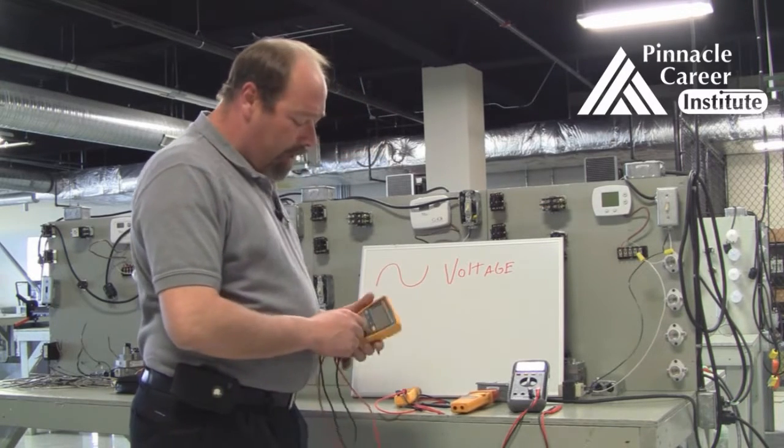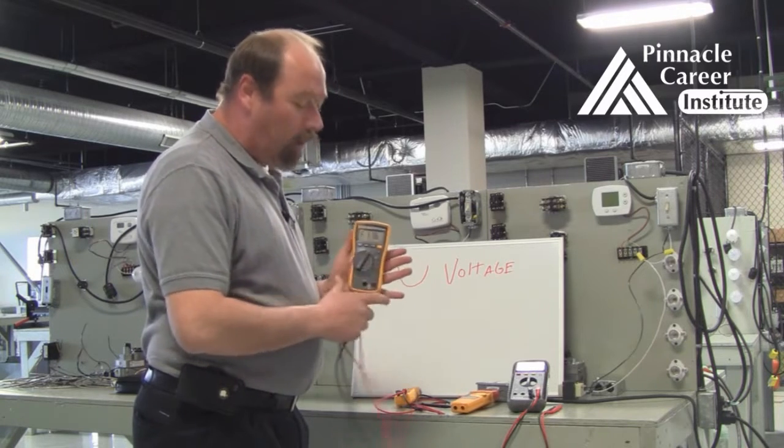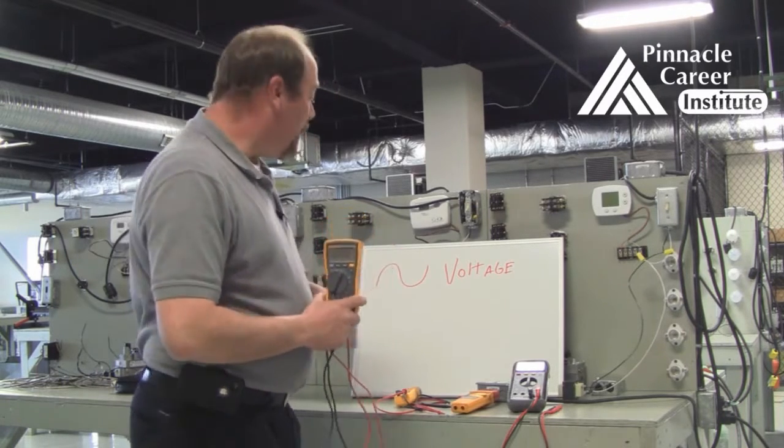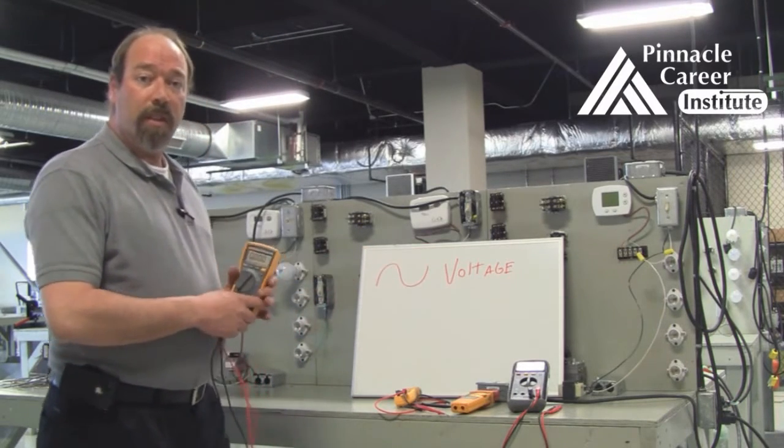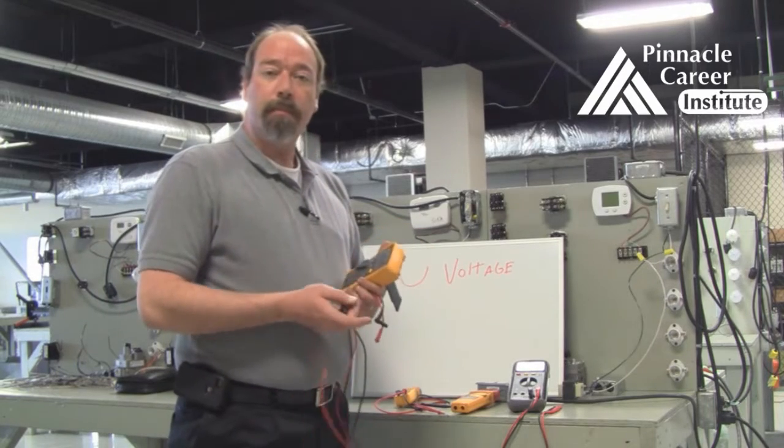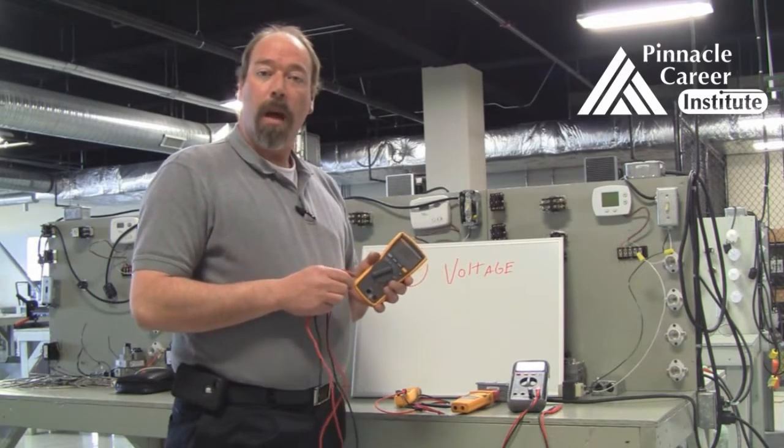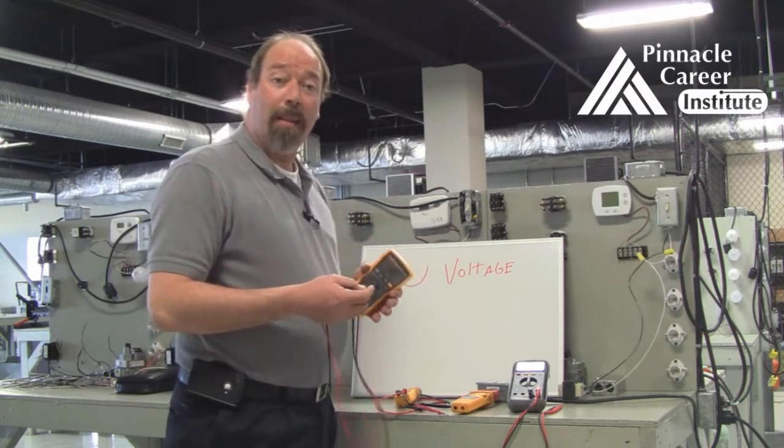The second thing you want to do is select the voltage rating on your meter. It will be assembled just like this. Once you have selected that, a lot of your meters will auto range, meaning go from high to low automatically.